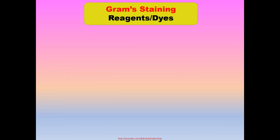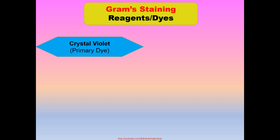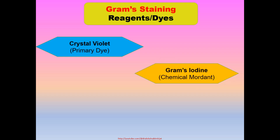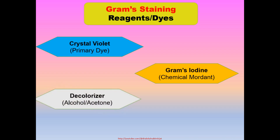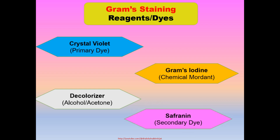Reagents used in Gram staining: 1. Crystal violet, which is also called the primary dye. 2. Gram iodine, also called a chemical mordant. 3. Decolorizer, 95% alcohol or acetone. 4. And the secondary dye, safranin. Gram-positive bacteria retain the color of primary dye crystal violet and show purple-blue color, while Gram-negative bacteria retain the secondary dye safranin and show pink color.